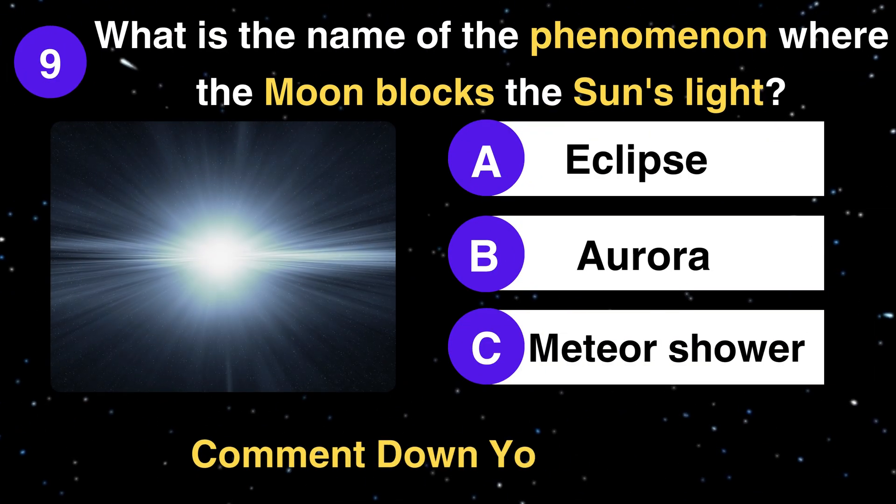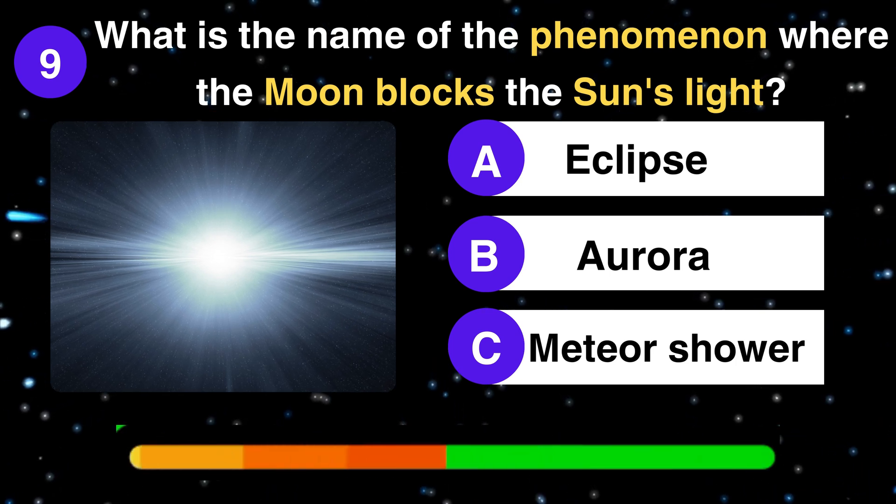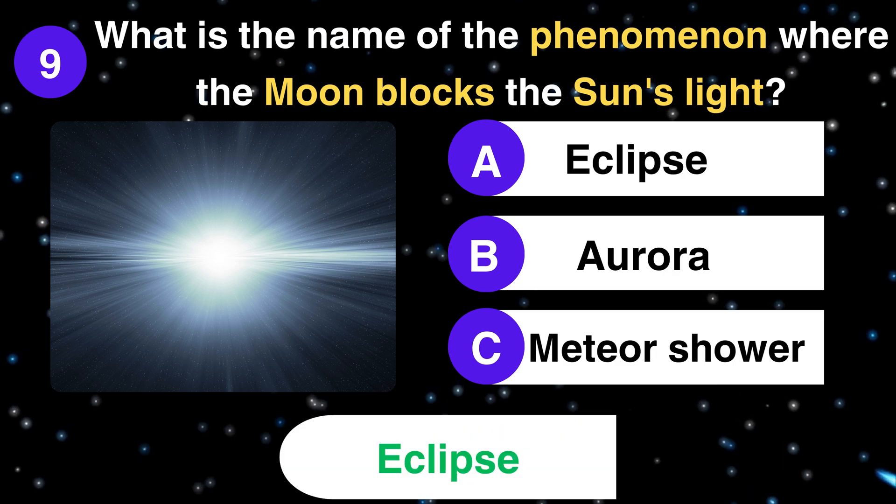What is the name of the phenomenon where the moon blocks the sun's light? Eclipse, Aurora, or Meteor Shower? Eclipse.